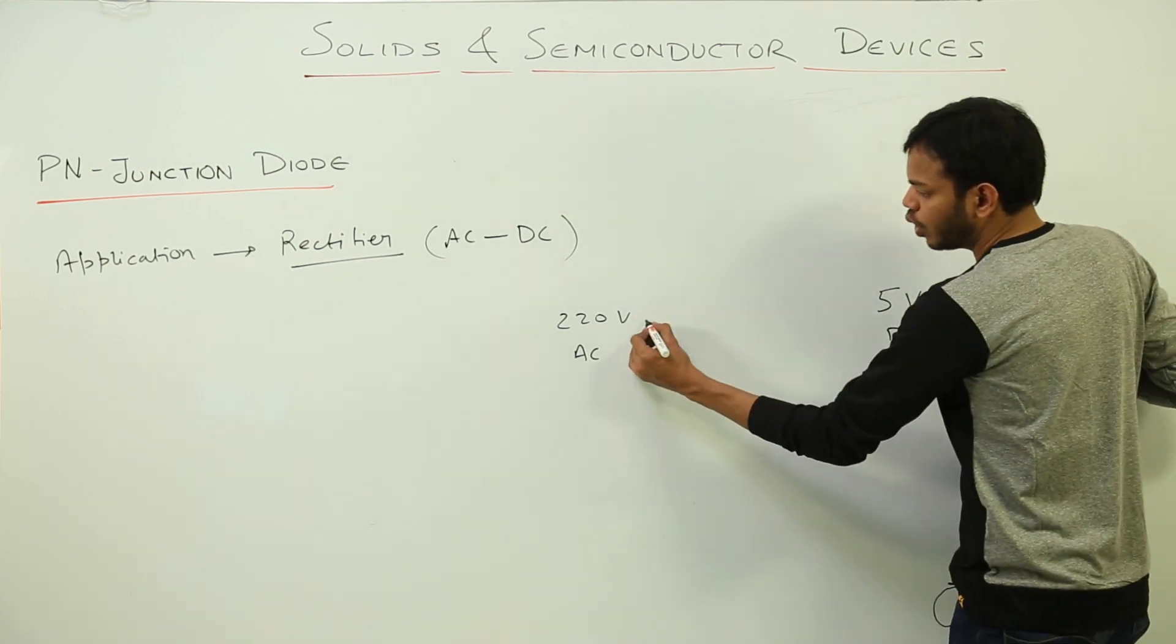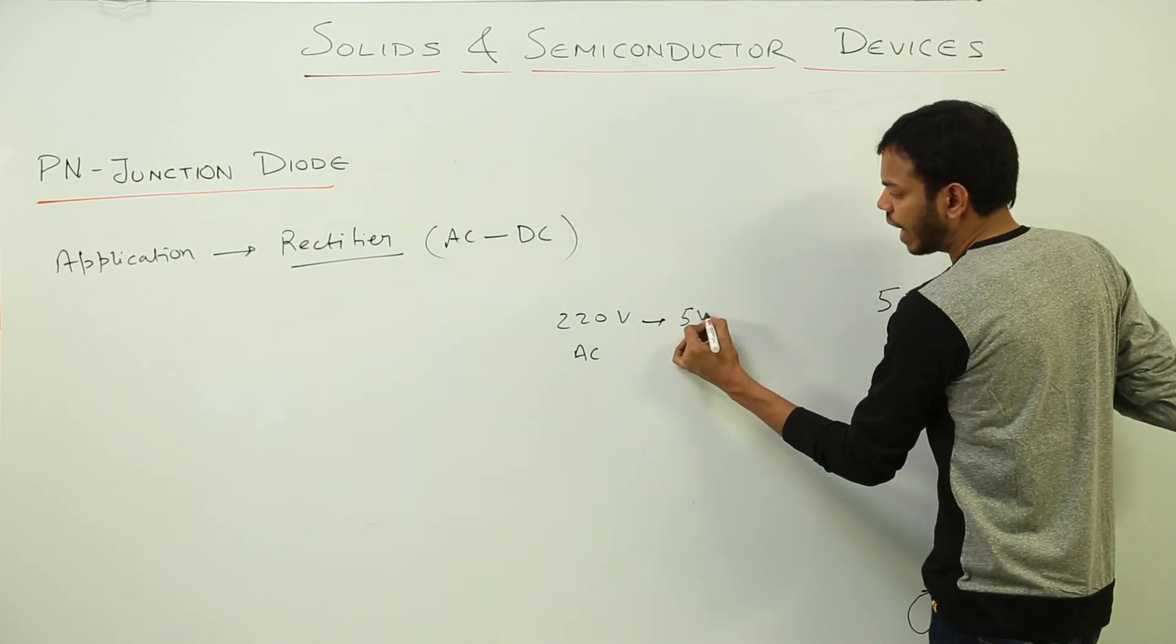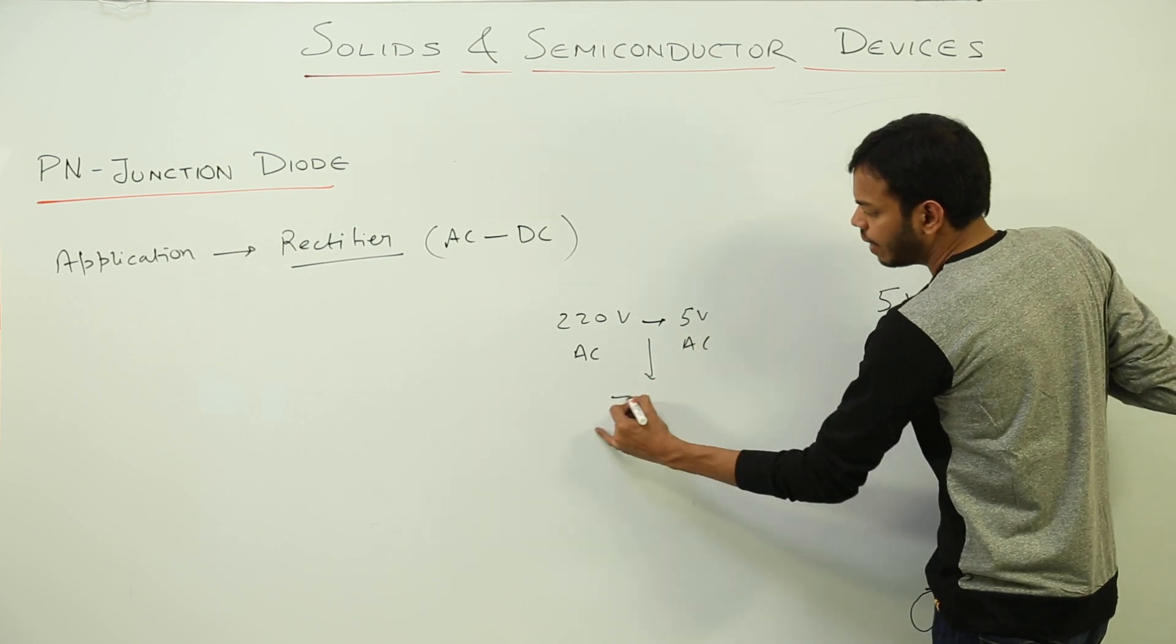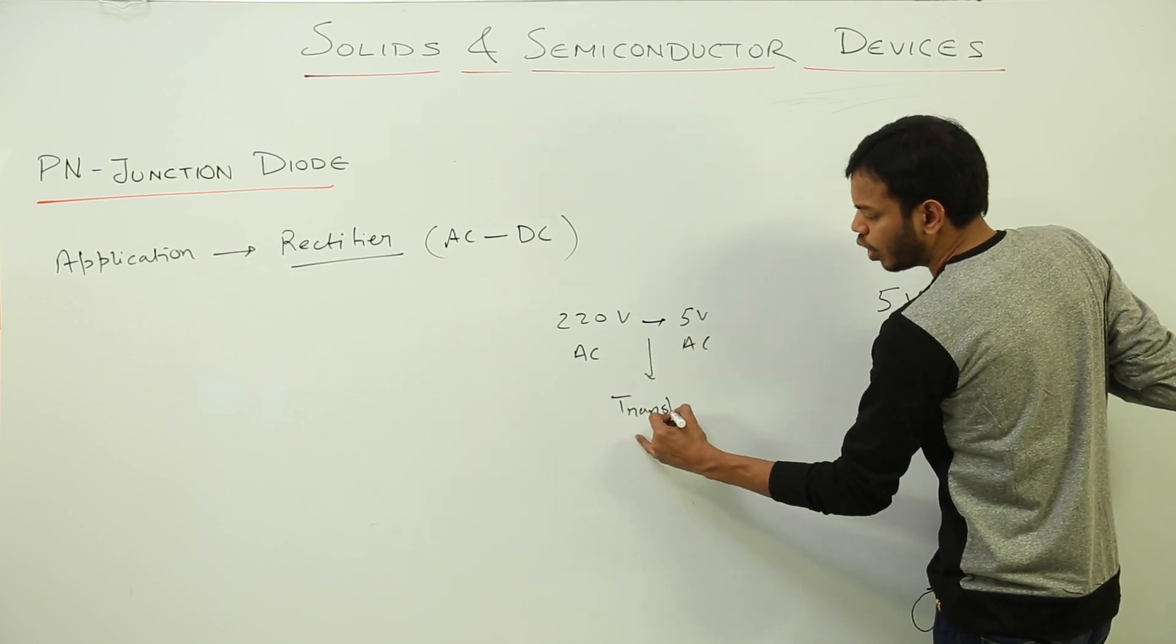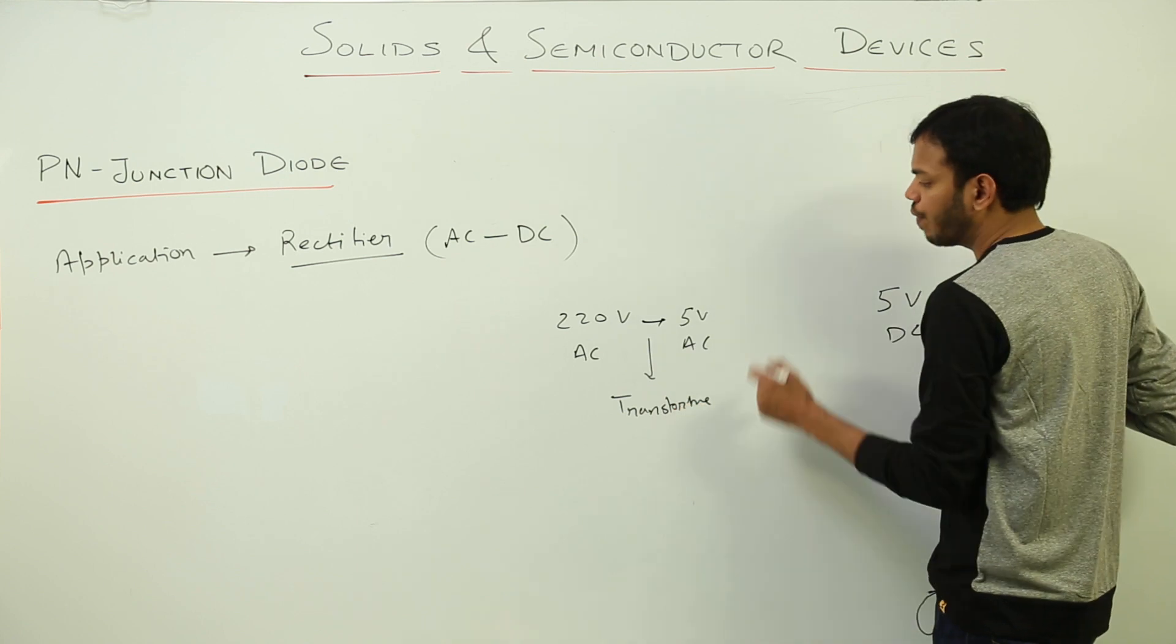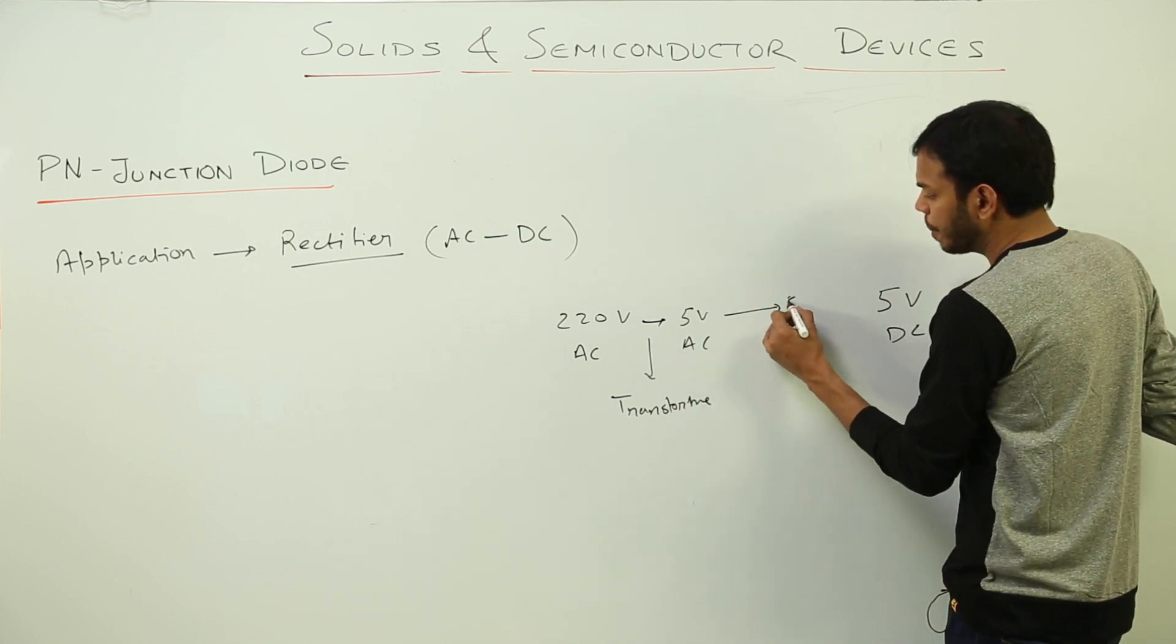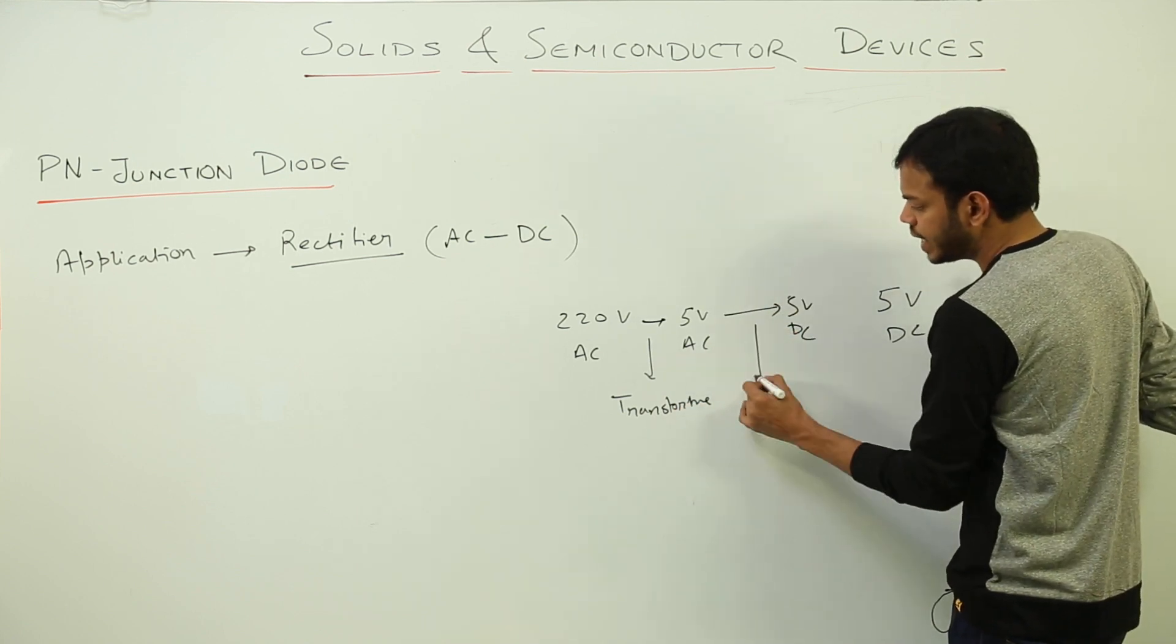First of all, 220 volt AC is converted into 5 volt AC. This is done by transformer which you have already studied. Right now 5 volt AC would be converted into 5 volt DC. This is done by rectifier which we are studying right now.